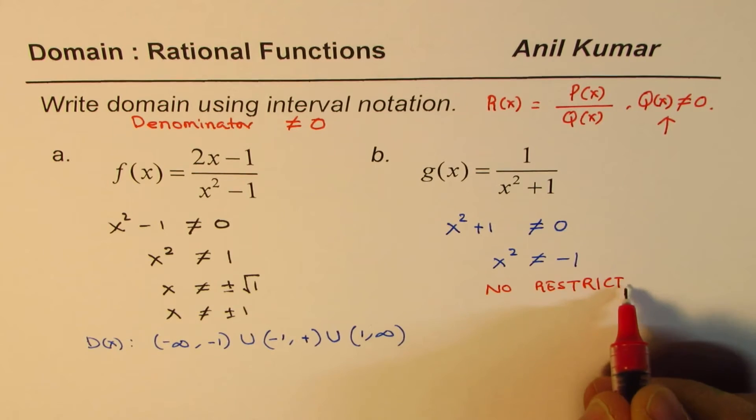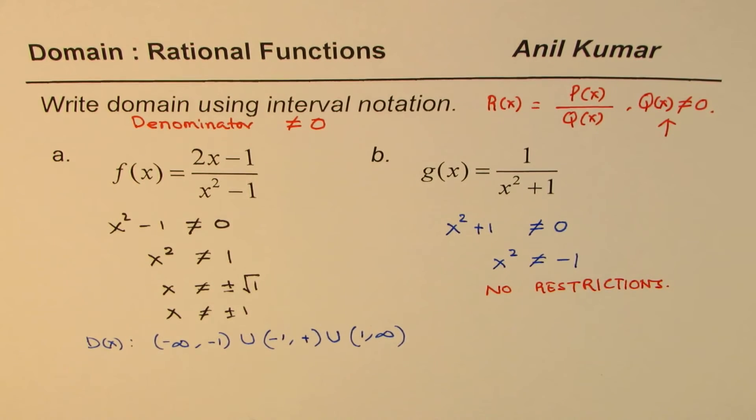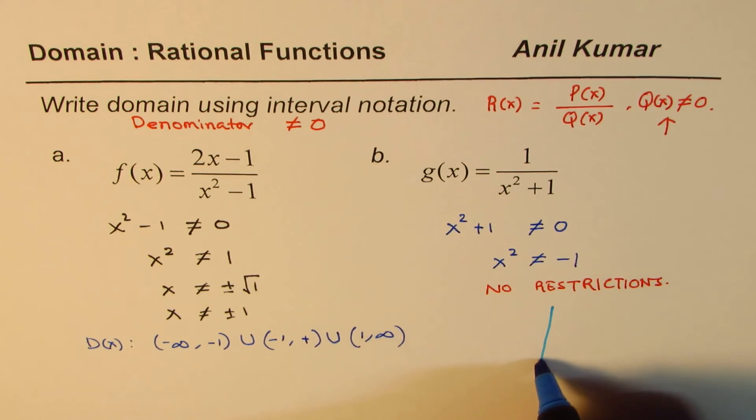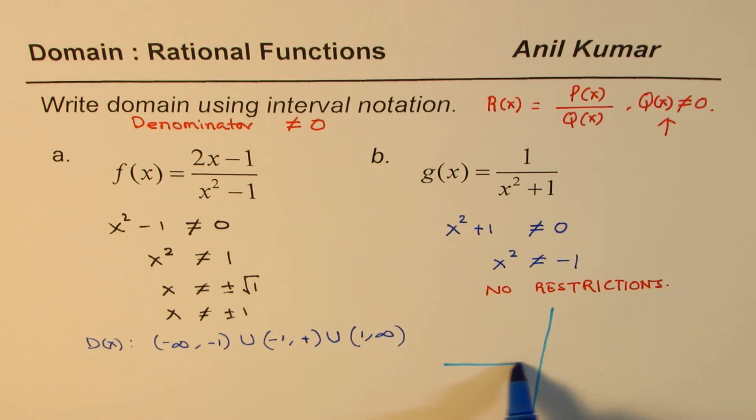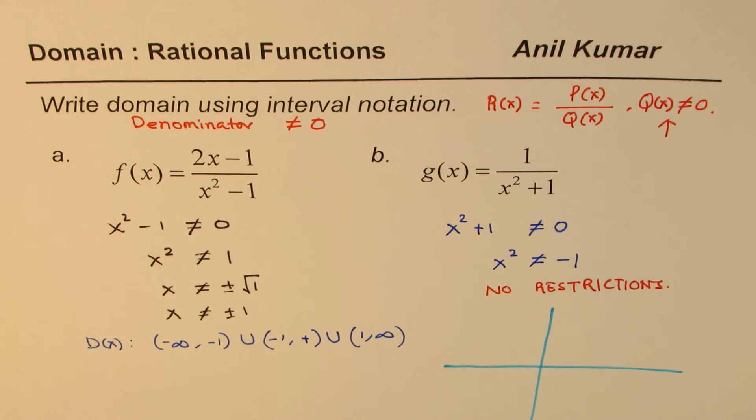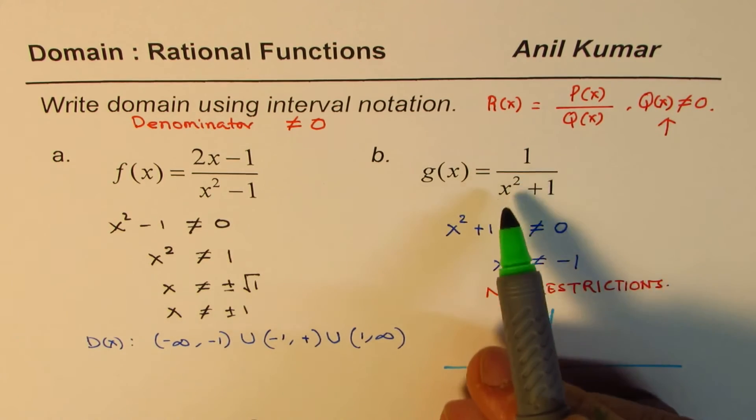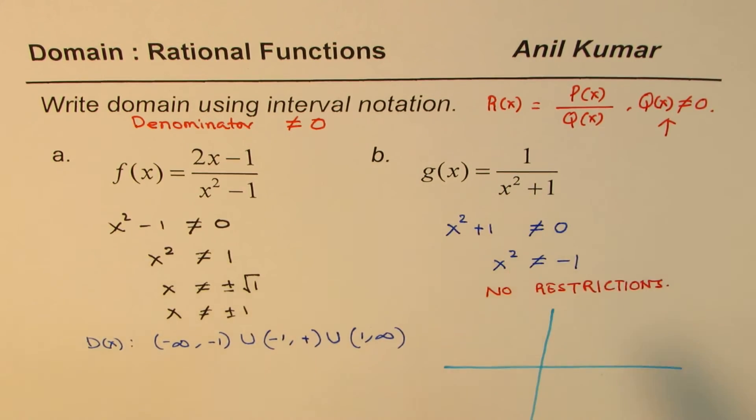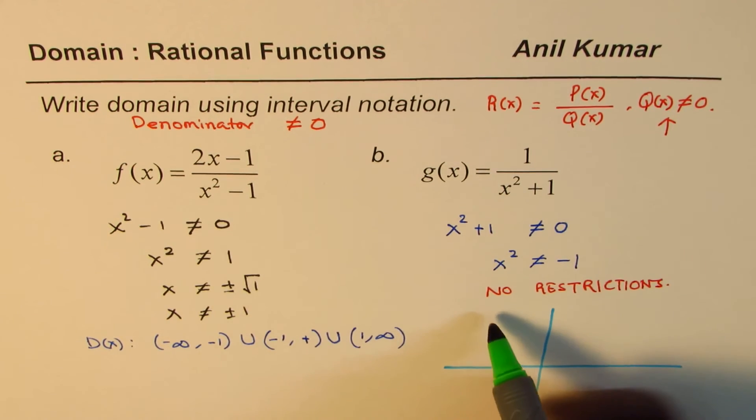So it is important to understand that even you can have rational functions which will not have any restriction. I like you to sketch the graph of this function, and then see for yourself why this does not have restrictions. To sketch the graph, you could do reciprocal. So if you sketch x square plus 1, what I will do here is, I'll do it in two steps. Let me sketch x square plus 1 first.